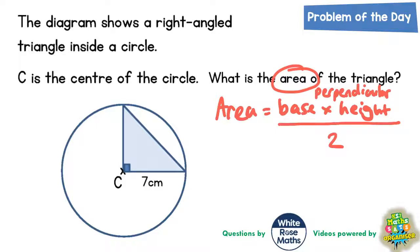The base is nice and easy — that's the line across the bottom of the triangle. So the base of this triangle is 7. The perpendicular height means the height that is straight up from the base, at right angles to the base of the triangle. So the height makes a right angle with the base — that's what perpendicular means.